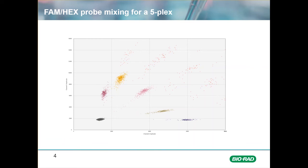On the y-axis, showing the FAM fluorescence, is the 100% FAM probe positive cluster for the SNP90C target. Just next to this, at a slight angle and towards the x-axis or HEX fluorescent channel, is a positive cluster created by adding a mixture of FAM and HEX probe at 75% FAM and 25% HEX. This second cluster detects SNP66C.